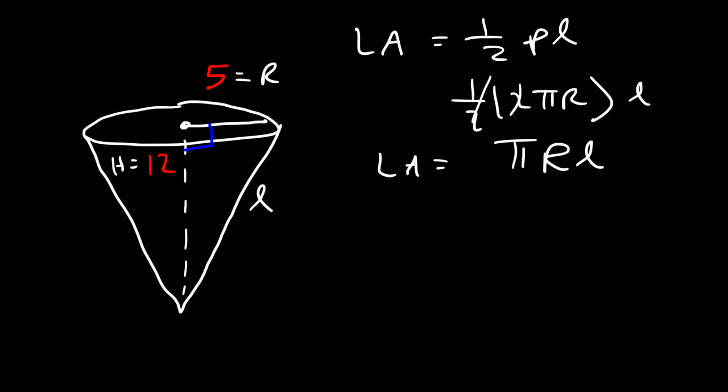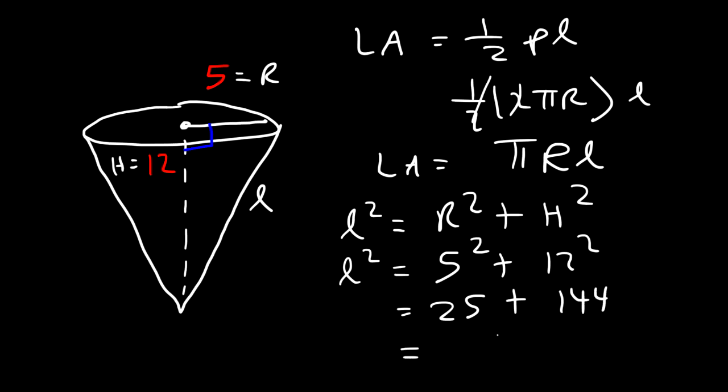So that's how you could find it. We need to calculate L first. Notice that we have a right triangle, so L² is equal to R² plus H². So in this example R is 5, H is 12. 5² is 25, 12 times 12 is 144, and 25 plus 144 is 169. So now what we need to do at this point is take the square root of both sides.